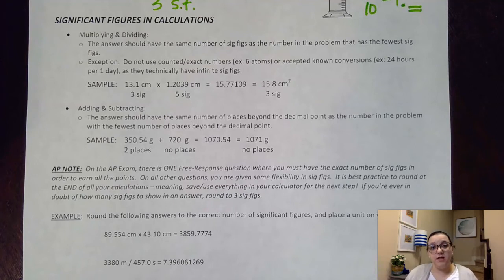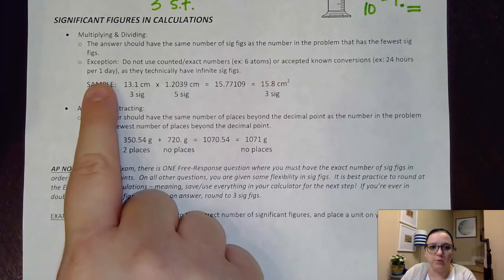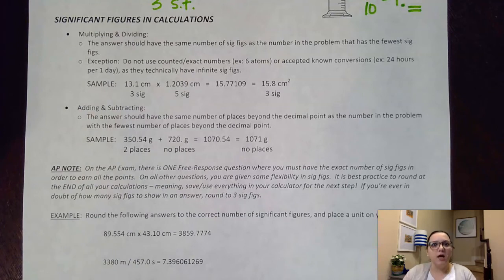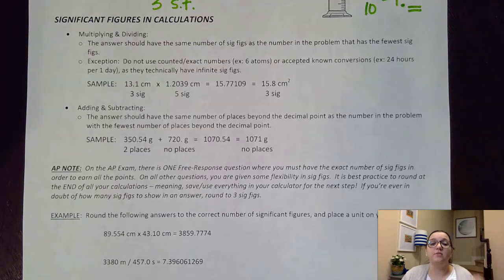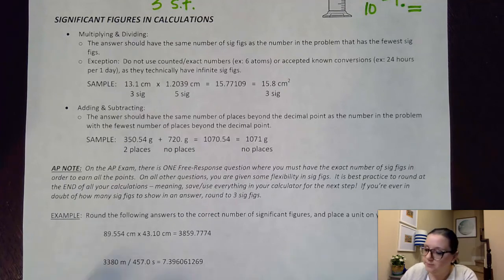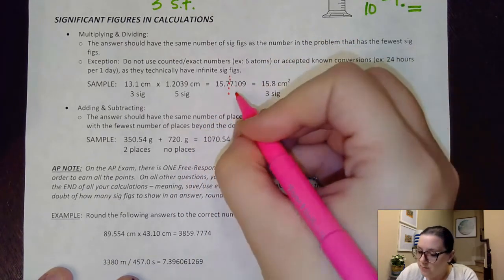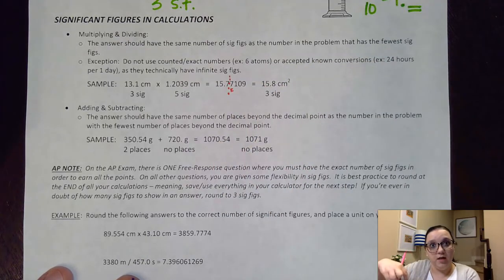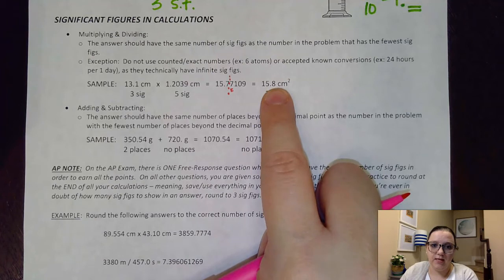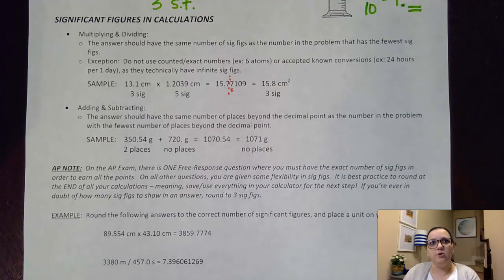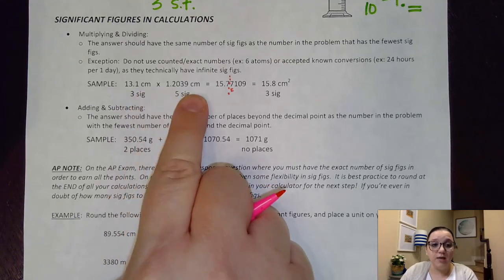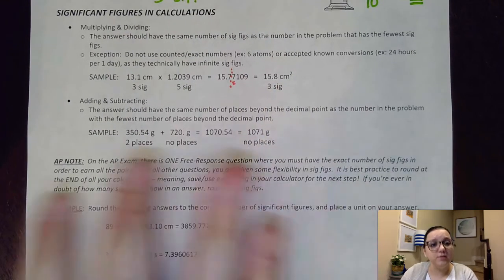Same thing goes for dimensional analysis — like 24 hours per one day. Those metric or time conversions are not used in sig fig determination, which means for dimensional analysis we typically only care about the first given number when determining sig figs for our answer. Of course, we need to cut this off and put a unit with it — I know I'm showing three sig figs, so I cut it off here. If this number is five or above, it rounds the previous number up, which is why we use 15.8 here. When multiplying, you also need to think about whether your units cancel or multiply together — centimeters times centimeters comes out to centimeters squared.